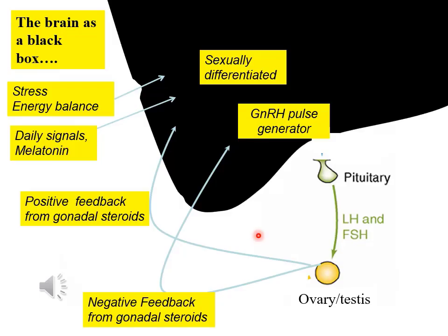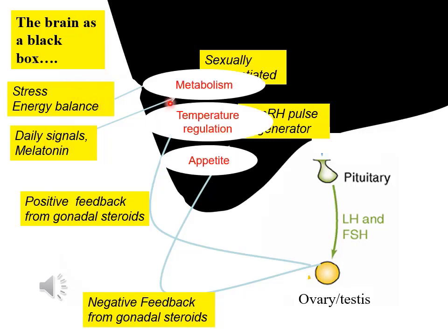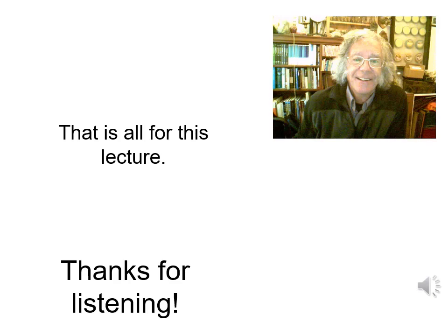Let's put the whole thing together. We started off looking at the brain as a black box with reproductive output, and we've seen it has a GnRH pulse generator, negative and positive steroid feedback, sexual differentiation within the hypothalamus, daily and seasonal signals, stress, and energy balance — all integrated together with metabolism, temperature regulation, and appetite. Thanks very much for listening.